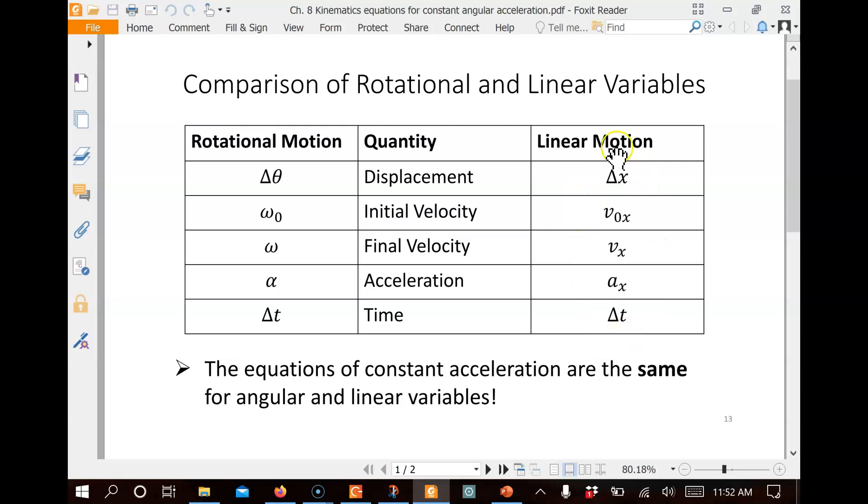Remember that we did this constant acceleration with translational motion along the x-axis here, for a line. We've got analogous variables for each of the angular quantities: displacement, initial velocity, final velocity, acceleration, and time.